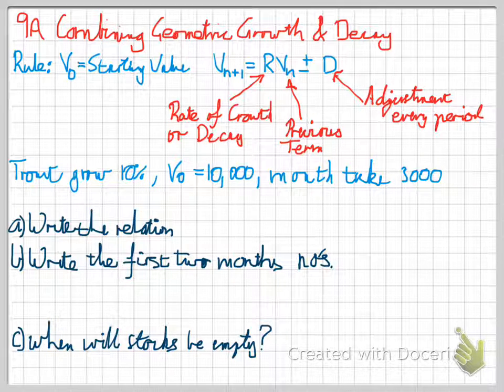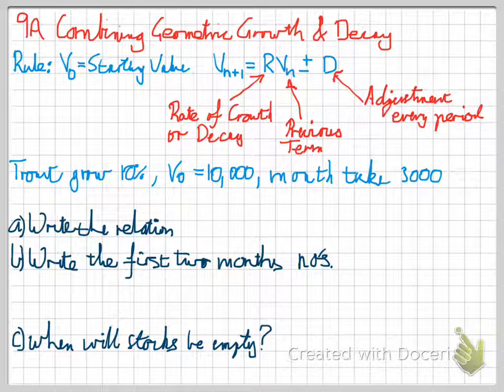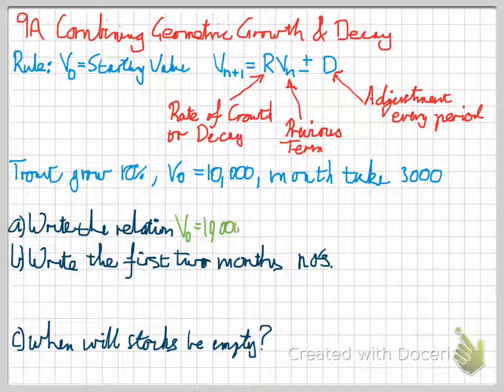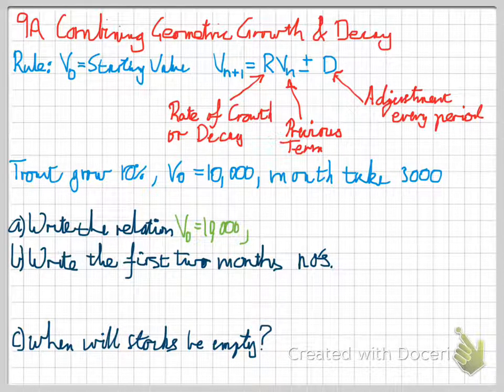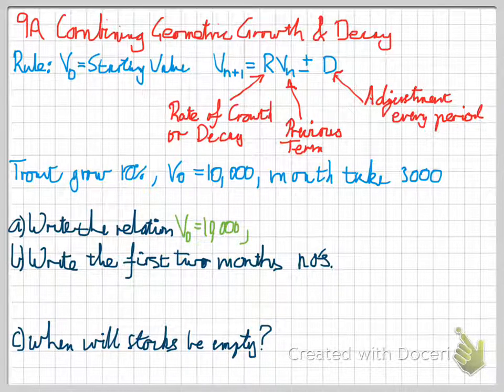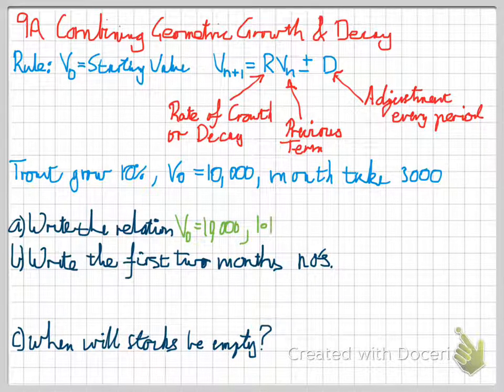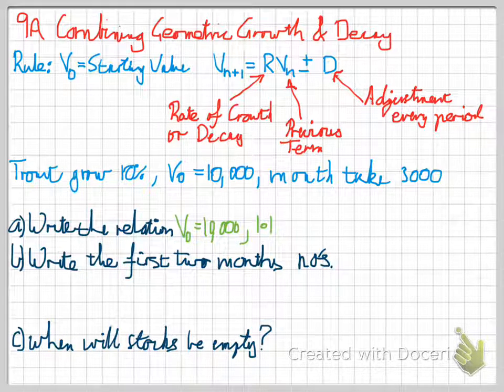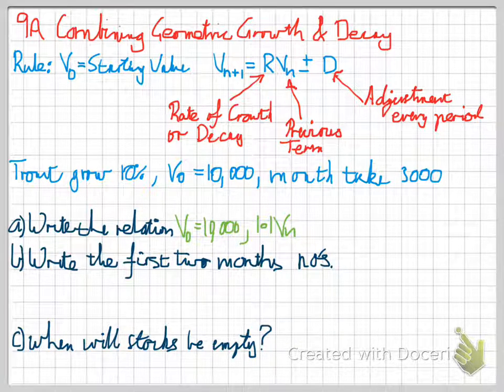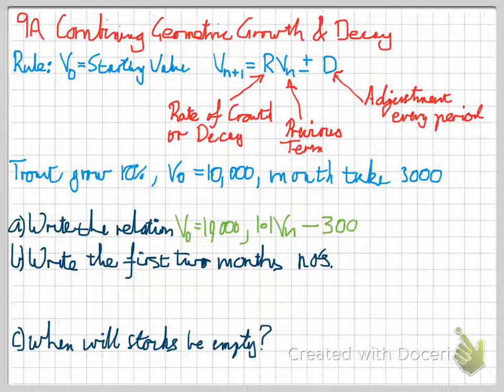So to write the relation, first off, we've got our starting value. So V0 is equal to 10,000. And our recurrent relation with that, so you take a look at the top again. So the rate, we find our R by adding the percentage increase to 1, all used in decimals. So R is going to be 1.1. Our Vn is whatever the previous term is, we'll use 10,000 for our first one. And then plus or minus the adjustment, so we're taking away fish. So we'd have take 3,000 every month.